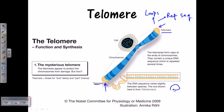Not only do they have this repeated sequence, but they also have a loop formation with the DNA at the terminal end. This sequence is kind of fixed but is slightly varied between species. For example, the sequence from Tetrahymena is slightly different from humans, but all species share this repeated sequence concept.